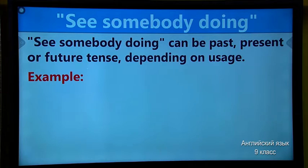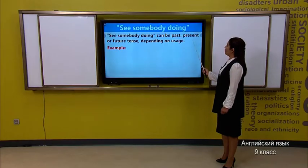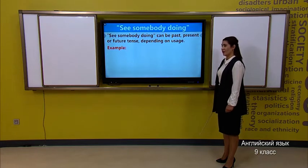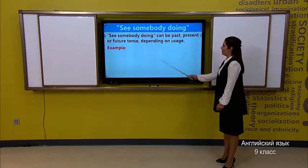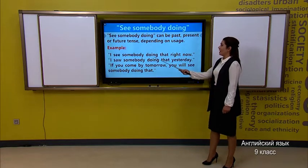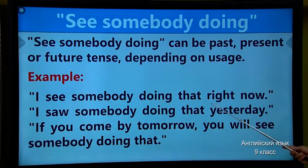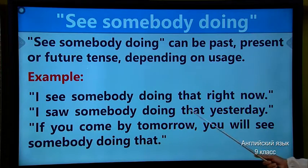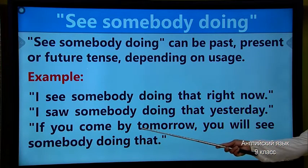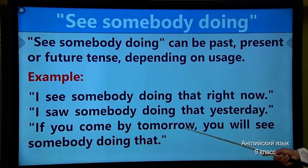So, depending on usage. Do you pupils know past simple? We add -ED or we take verbs from the table. Now, present simple you know, and the future tense also you know — I believe you. Now I give you some examples. 'I see somebody doing' — because here we add -ING. 'I saw somebody doing that yesterday.' 'If I come by tomorrow, you will see somebody doing that.' Did you copy out the examples?